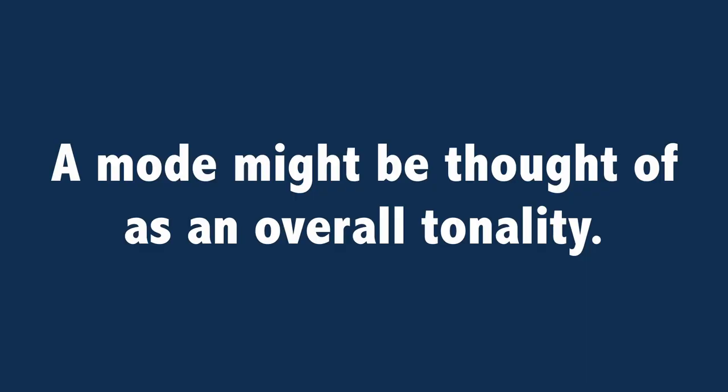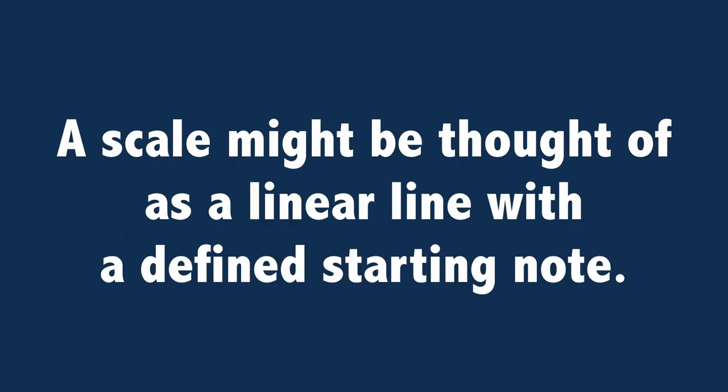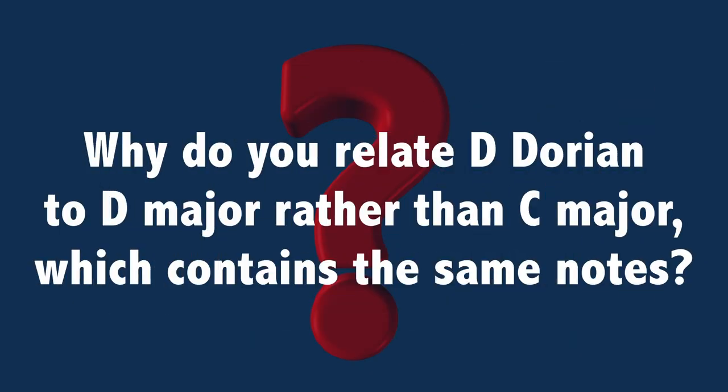One way in which you might see a difference is if you think of a mode as an overall tonality, whereas a scale might be thought of as a linear line with a defined starting note. As an improviser, though, I think of a scale as a group of notes, not a line of notes. So you'll hear me refer to the D-Dorian mode and the D-Dorian scale somewhat interchangeably.